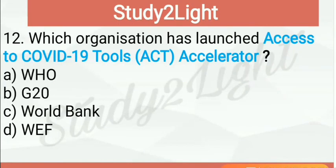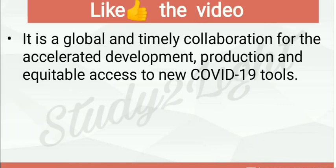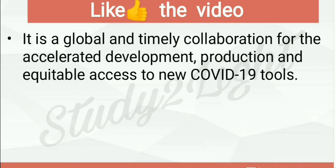Next question: which organization has launched Access to COVID-19 Tools — in short, ACT Accelerator? The ACT Accelerator has been launched by G20, that is the Group of 20. It is a global and timely collaboration for the accelerated development, production, and equitable access to new COVID-19 tools.